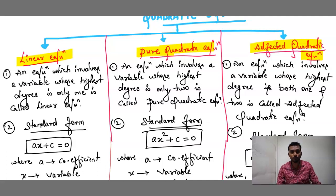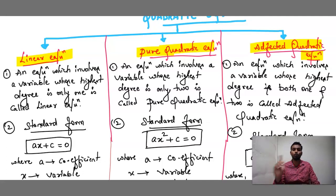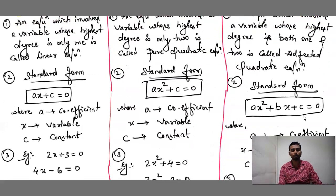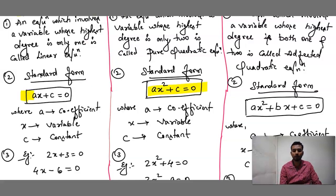Affected quadratic equation: an equation which involves a variable whose highest degree is both 1 and 2 is called an affected quadratic equation. The standard form of linear equation is ax + c = 0, where a is coefficient, x is variable, and c is constant. The standard form of pure quadratic equation is ax² + c = 0. The standard form of affected quadratic equation is ax² + bx + c = 0.